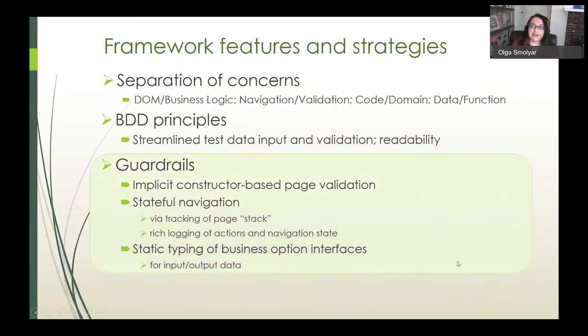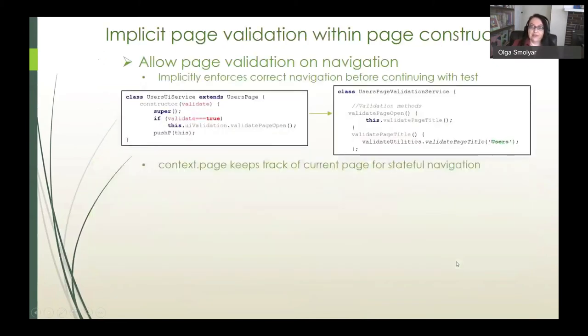Next, we'll take a look at some of our guardrails. Firstly, implicit page validation within page constructors allows page validation on navigation. This implicitly enforces that correct navigation has occurred before continuing with the test. This is an example of a constructor that calls a validation method, which can validate any aspects of a page, and in this case, it's just looking for the title. Context dot page is a global that constructors also take care of that keeps track of the current page for stateful navigation.